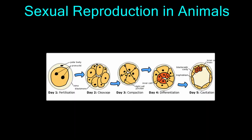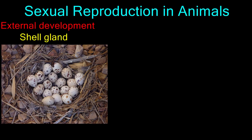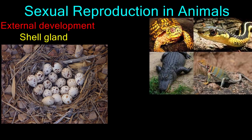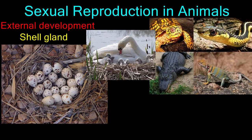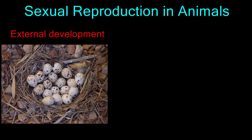Once fertilization has occurred, the zygote will undergo mitosis and begin developing into an embryo. In some animals, the embryo will complete its development inside a hard shell laid by the female after mating. The shell gland in the female allows her to produce the shell that protects the embryo from drying out. The hard shell made external development on land possible for animals like turtles, crocodiles, snakes, birds, and even some mammals like the spiny anteater and platypus.